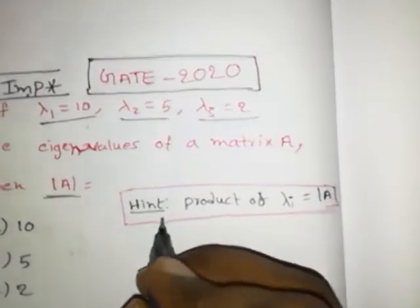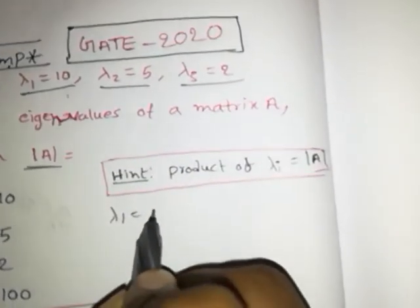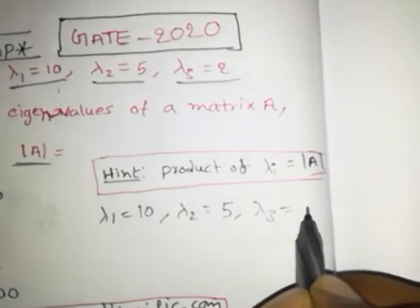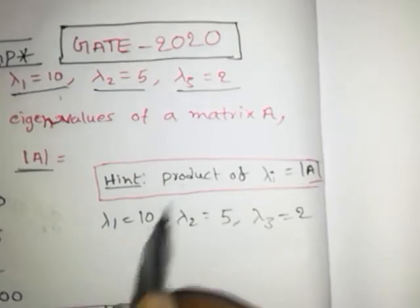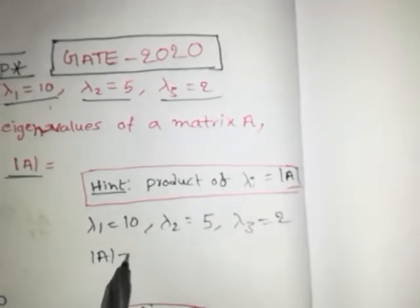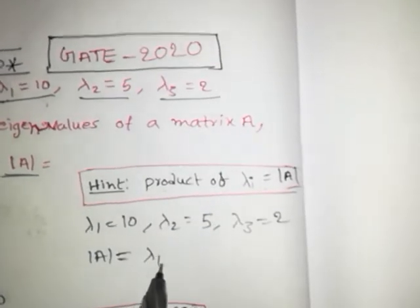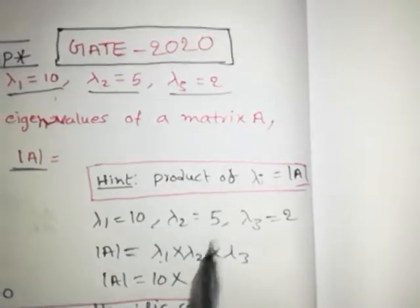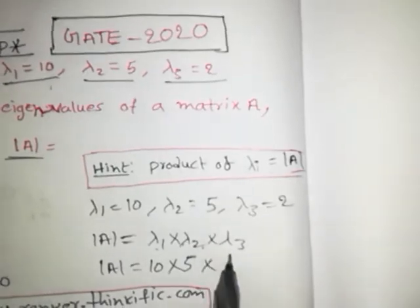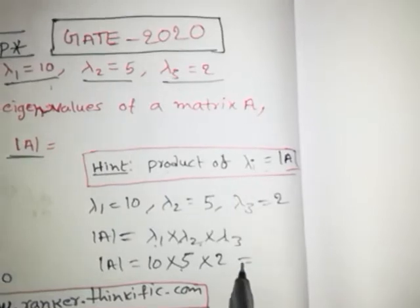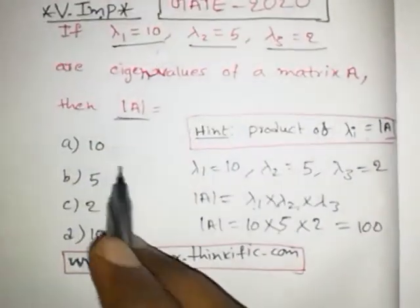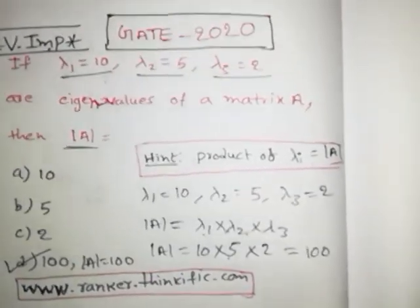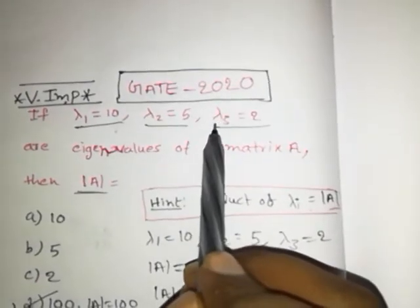We have three eigenvalues: λ1 = 10, λ2 = 5, λ3 = 2. The product of the eigenvalues equals the determinant of the matrix, so det(A) = λ1 × λ2 × λ3 = 10 × 5 × 2 = 100. Among the four options, the correct option is D: det(A) = 100.